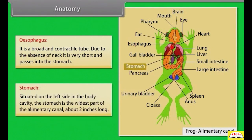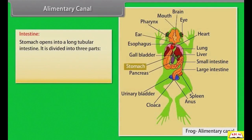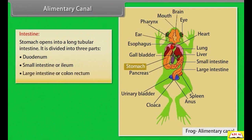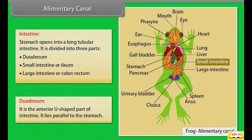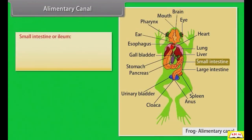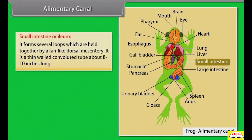The stomach is situated on the left side in the body cavity and is the widest part of the alimentary canal, about two inches long. The stomach opens into a long tubular intestine divided into three parts: duodenum, small intestine or ileum, and large intestine or colon rectum. The duodenum is the anterior U-shaped part of the intestine, lying parallel to the stomach. The small intestine or ileum forms several loops held together by a fan-like dorsal mesentery, and is a thin-walled convoluted tube about eight to ten inches long.